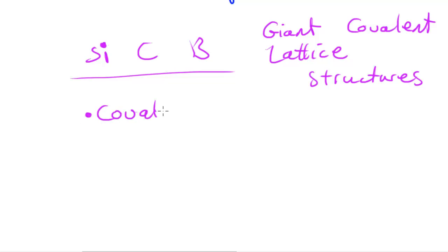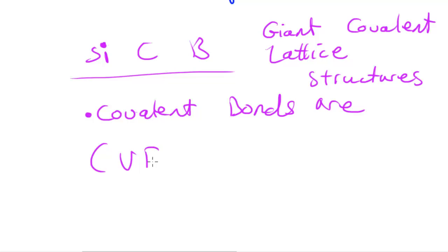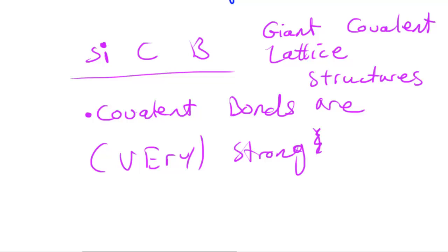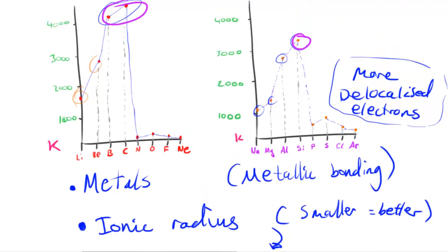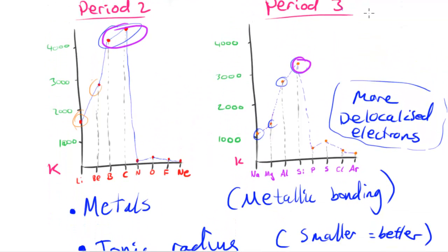In order for these elements to boil, those covalent bonds need to be broken, and that's going to require a very large amount of energy. So the boiling points of those three elements are very high. When you go from boron to carbon the boiling point increases.